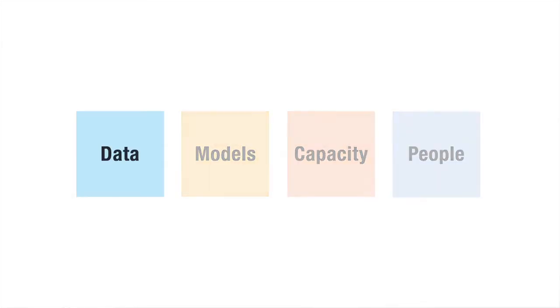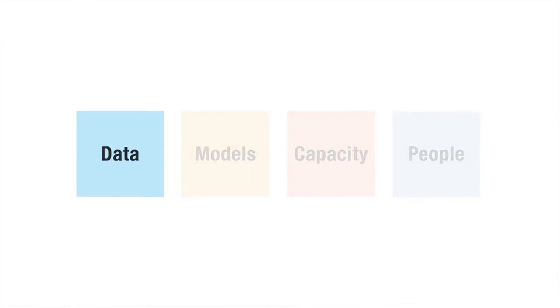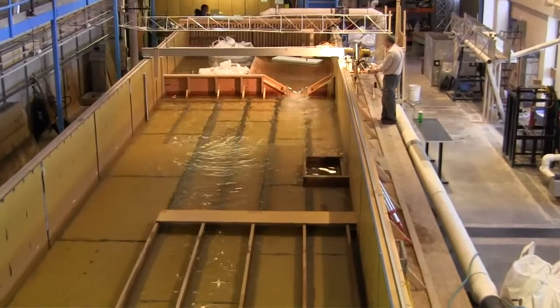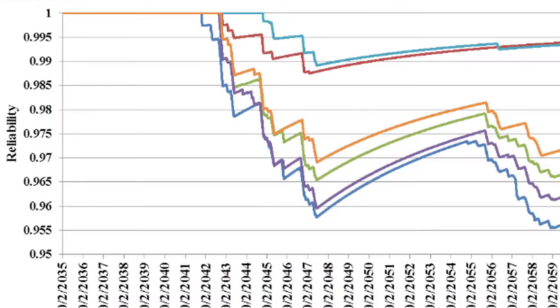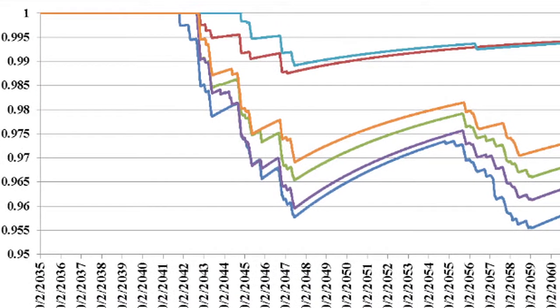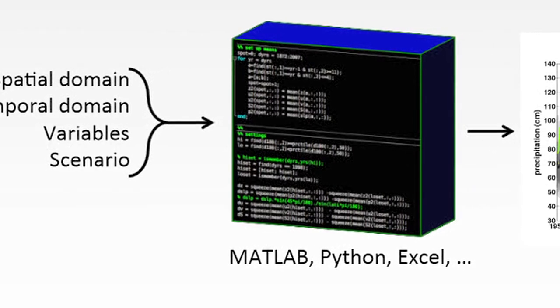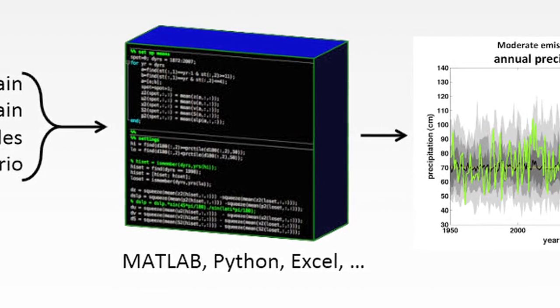First, we need lots of data on water sources, on how water moves through the landscape, and on how climate change affects the availability of water. Science is producing massive amounts of data. We need computers and computer models to filter the volumes of data and produce the detailed high-resolution forecasts that will be useful for planning.